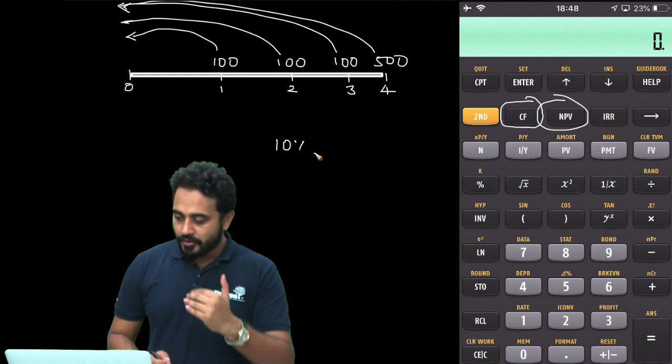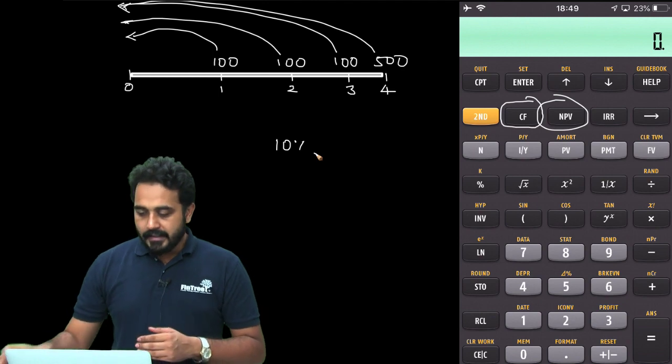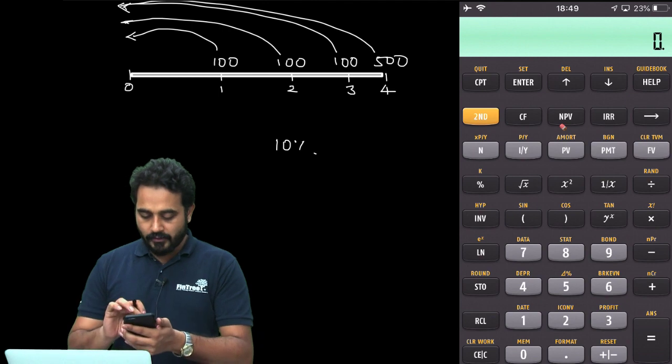So, let us assume discount rate is 10%. So, be a little patient while you are watching the videos. I will show you a longer way of doing it and then I will show you a shortcut as well.